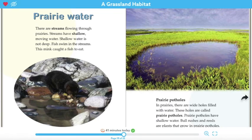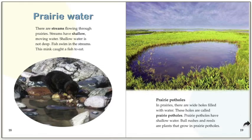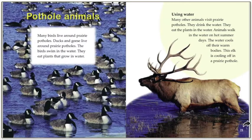Prairie potholes. In prairies there are wide holes filled with water called prairie potholes. Prairie potholes have shallow water, and bullrushes and reeds are plants that grow in them. Many birds like ducks and geese live around prairie potholes. They swim in the water and eat plants that grow there. Many other animals visit prairie potholes to drink the water, eat plants, and cool off on hot summer days. This elk is cooling off in a prairie pothole.